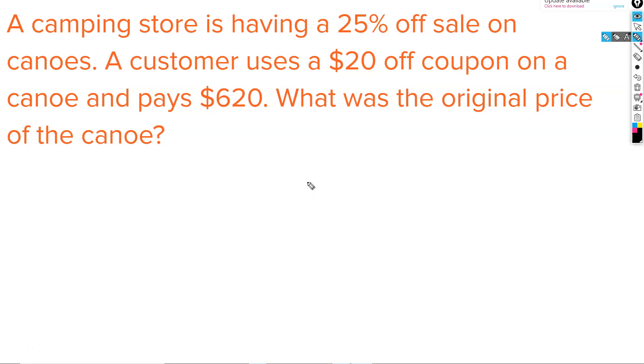Let's try one more. A camping store is having a 25% off sale on canoes. A customer uses a $20 off coupon on a canoe and pays $620. What was the original price of the canoe? If there's a 25% off sale, that means we're paying 75% of the original unknown price.